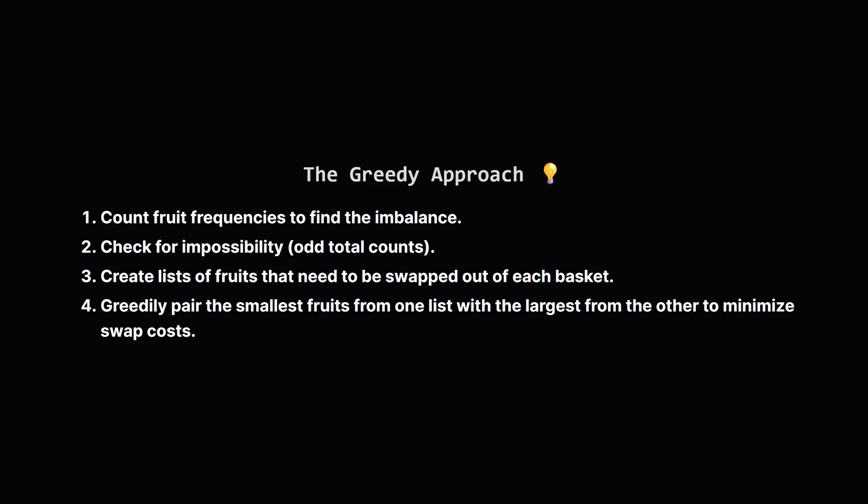This brings us to the greedy approach. The overall idea is to first count everything up to find out which fruits are in excess and which are needed in each basket. While we're counting, we can do our impossibility check. Then we create lists of all the fruits that need to be moved. Basket one has a list of fruits to give away, and so does basket two. To get the minimum cost, our greedy strategy will be to always make the cheapest possible swaps.